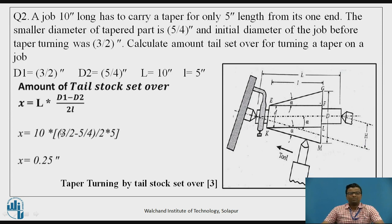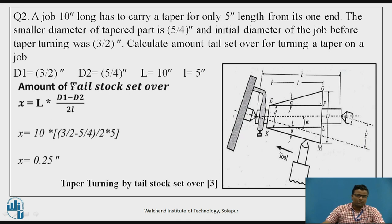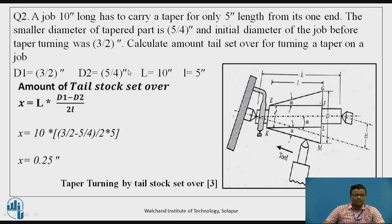Example 2: D1 = 3/2 inches, D2 = 5/4 inches, total length L = 10 inches, taper portion length l = 5 inches. Substituting into x = l × (D1 − D2) / 2L gives x = 0.25 inches, which is the length of the tailstock set-over.